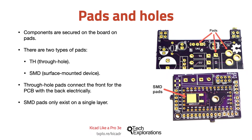Pads and holes are the most prominent feature of a printed circuit board. Pads come in two varieties and in several shapes. They're either TH or through-hole pads, and SMD or surface-mounted device pads. In the top image on the right side of this slide you can see an example of a board that contains exclusively through-hole pads, and in the bottom image you can see a board that contains through-hole and SMD pads.